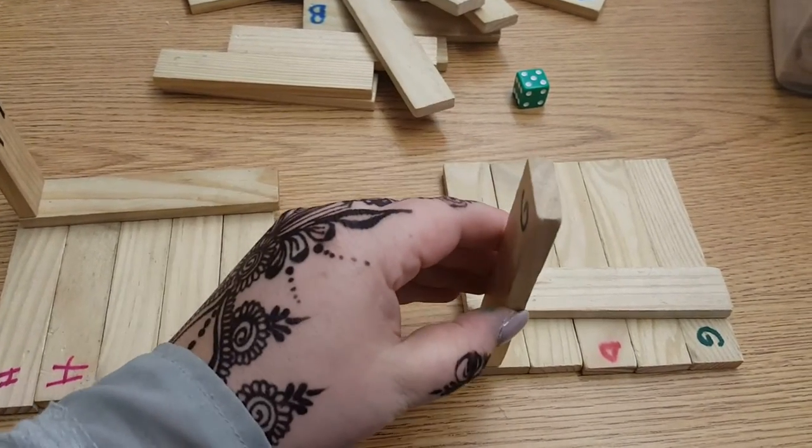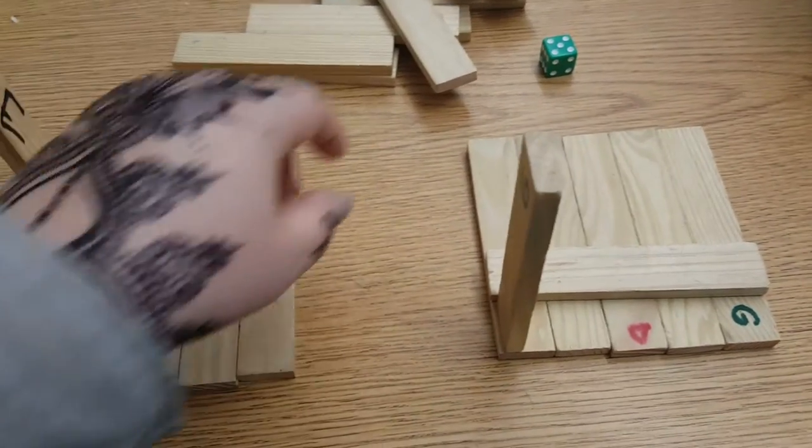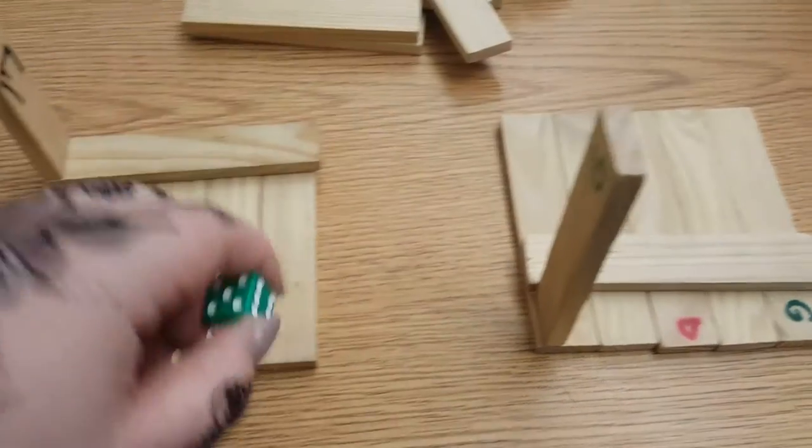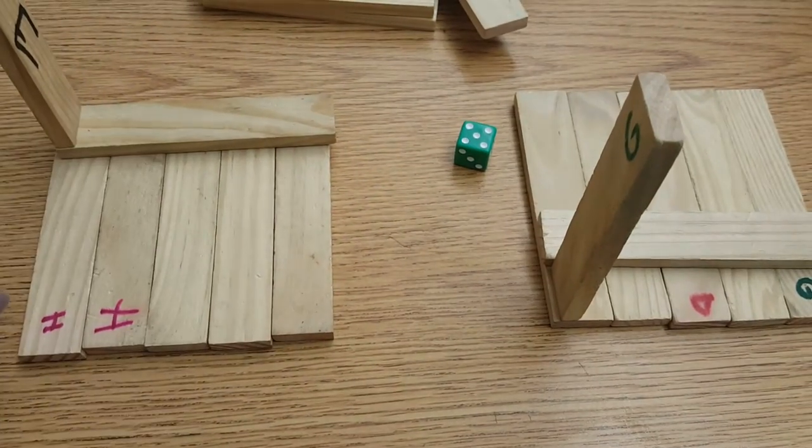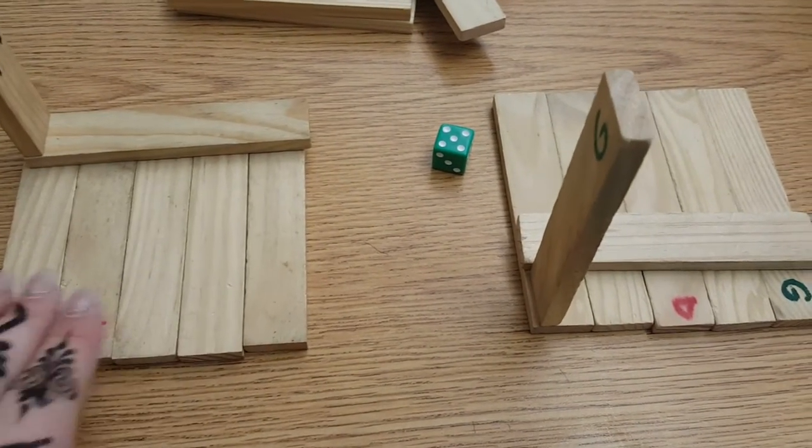If you have one piece fall over while you're setting up your piece, you may fix that one piece. But if you have two or more pieces fall over, you must start over with just your five flat blocks.